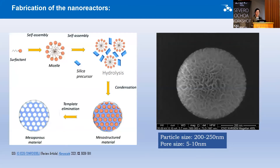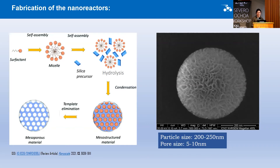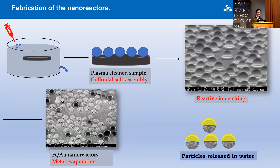To fabricate the nanoreactors, the first step is synthesizing the silica particles. The synthesis is straightforward: a surfactant in water forms micelles, and at high temperature they self-assemble. Adding a silica precursor causes hydrolysis and condensation around the micelles to form mesostructured silica particles. At high temperature we do calcination to clean the silica particles. The resulting particles have a size of 200–250 nm and pore size of 5–10 nm.